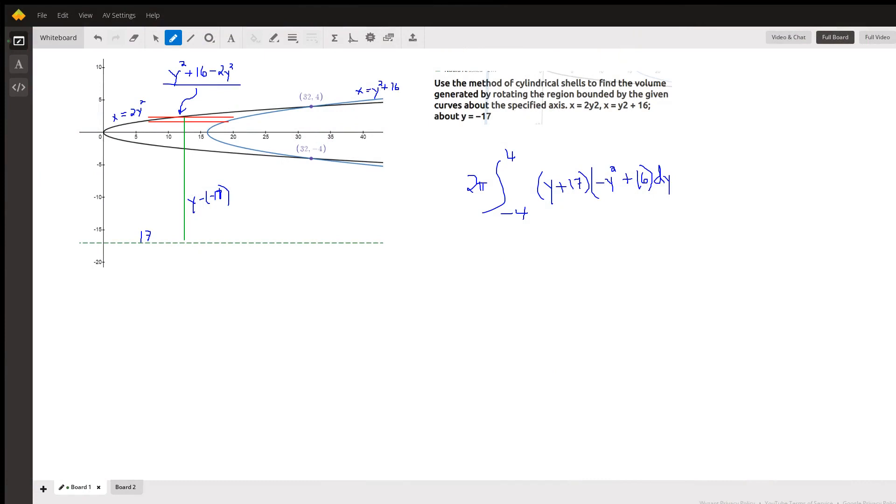Okay, let's set up the integral that will give us the volume indicated in this problem. Here's the graph of a rightward opening parabola with vertex at the origin, x equals 2y squared.